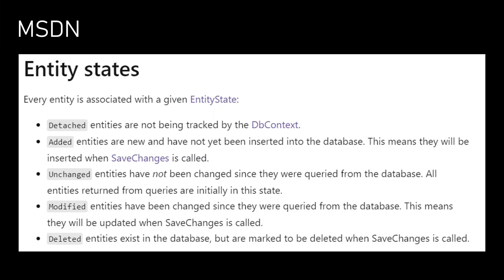This information is from MSDN. Here you can understand how the change tracker decides what entity state to assign to a particular entity. If the entities are not being tracked, then it will assign the Detached state. If the entities are new and have not yet been inserted into the database, then it will be Added. If the entities have not been changed since they were queried from the database, then the state is Unchanged. If the entities have been modified, then the state will be Modified. If the entities are marked to be deleted, then the state will be Deleted.